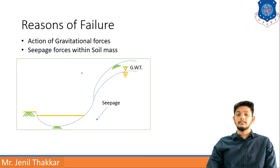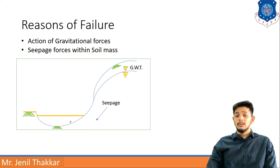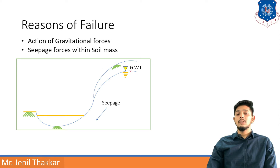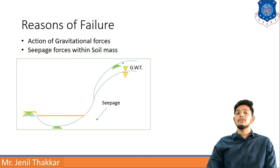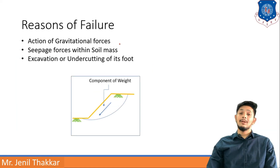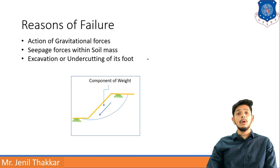Another reason is seepage forces within the soil mass. If the water table — shown here by the inverted triangle — is present and water is moving through this area, this seepage will make the slope unstable. The moving water below causes the soil above to become unstable, which can result in failure.